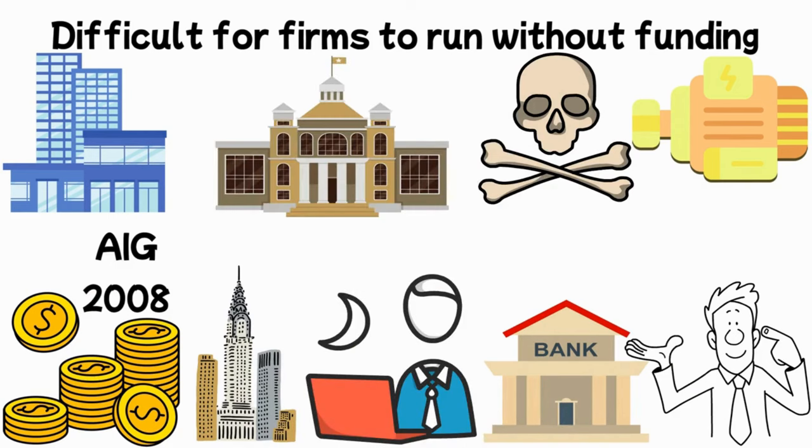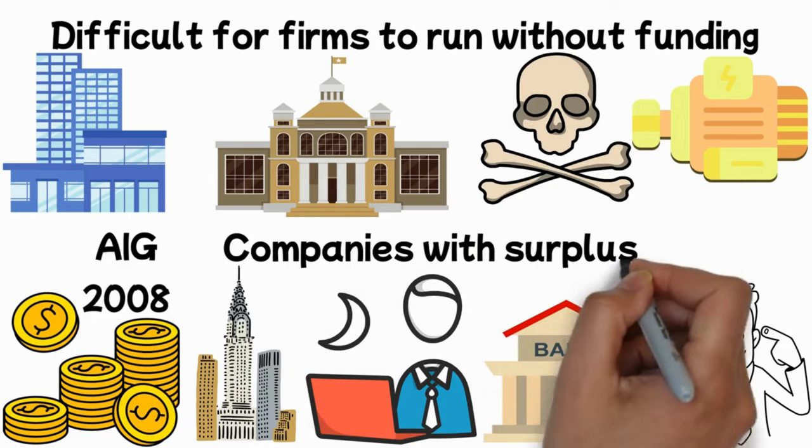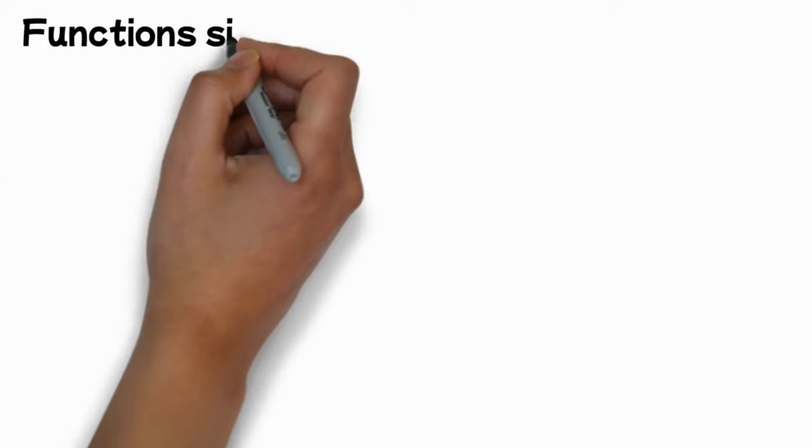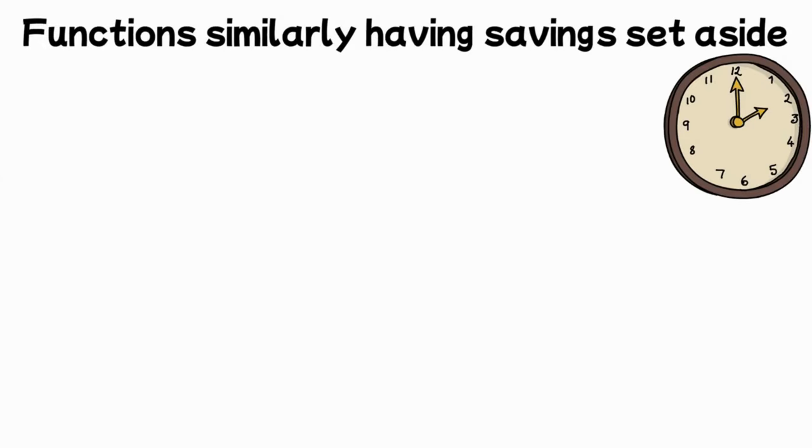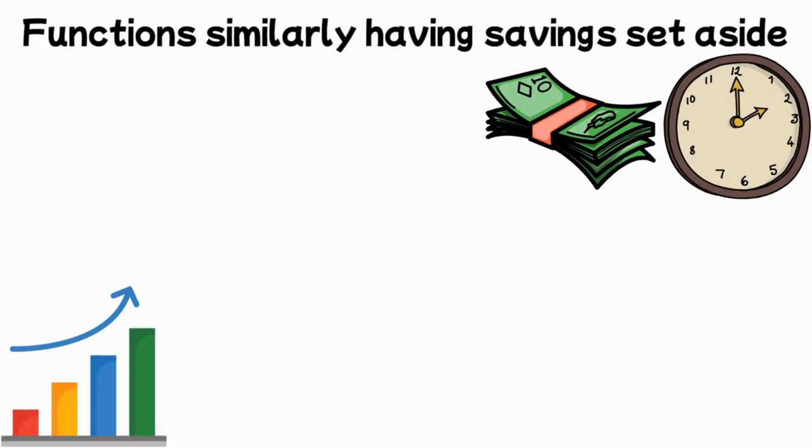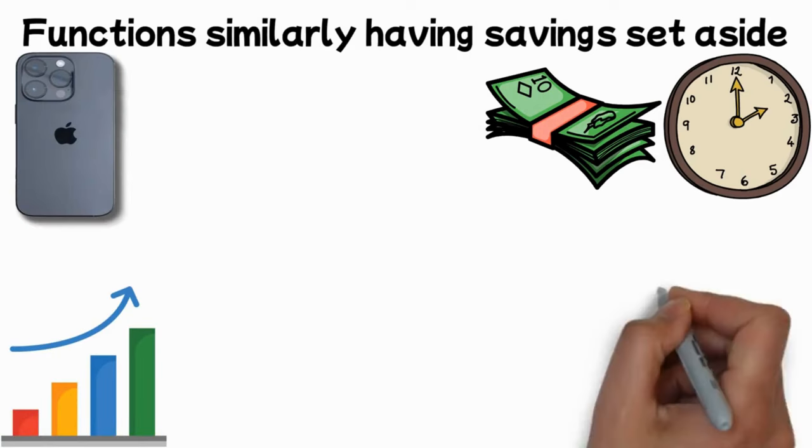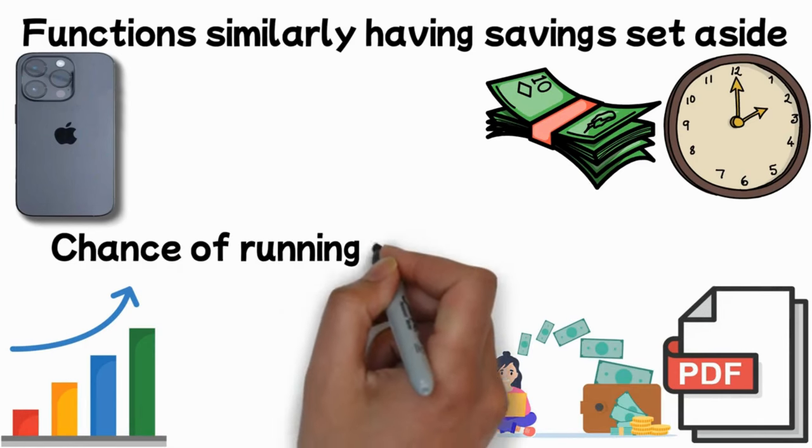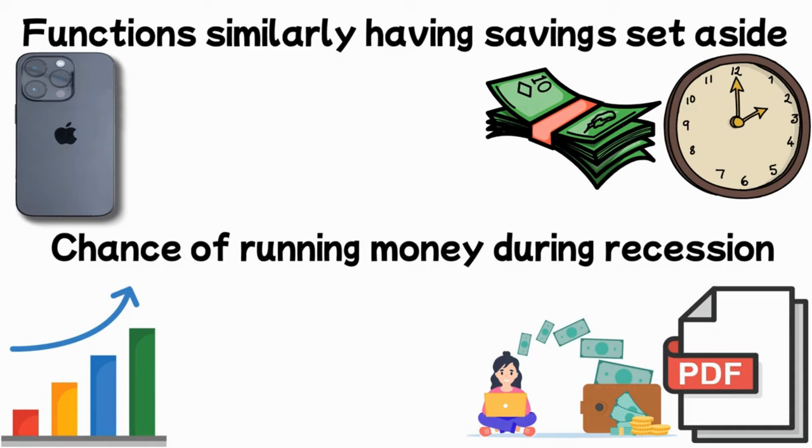Therefore, choosing companies with surplus capital is a wise choice when making financial investments. It functions similarly to having savings set aside for difficult times. For instance, even in times of price increases, corporations such as Apple and Microsoft consistently maintain substantial cash reserves. Rather than take the chance of running out of money during a recession, they would prefer to see some of their money gradually lose value due to rising prices.